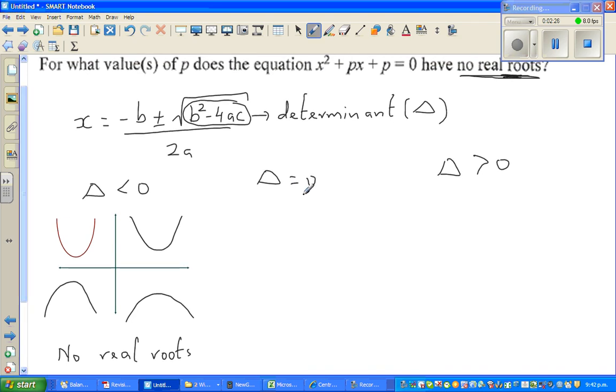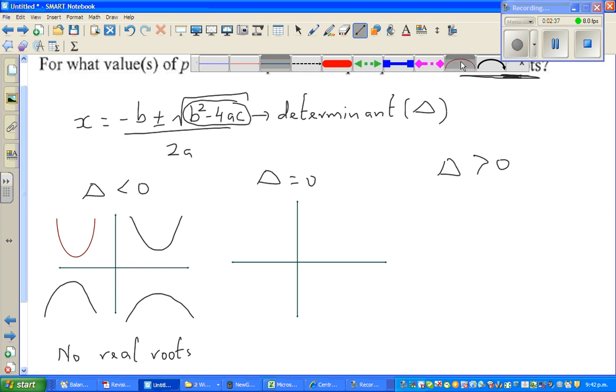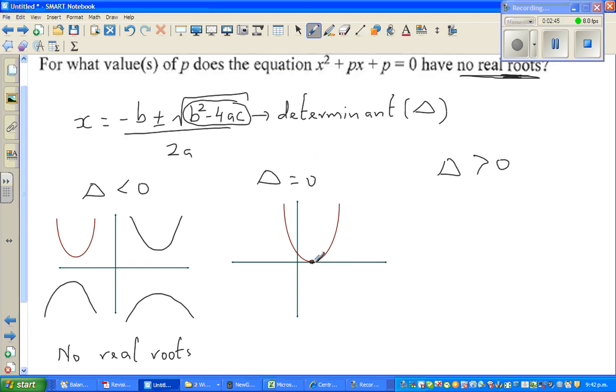When it is equal to 0, you have only one solution. Your parabola probably may look somewhat like this. It just passes through one point. So this case, you say only one root.